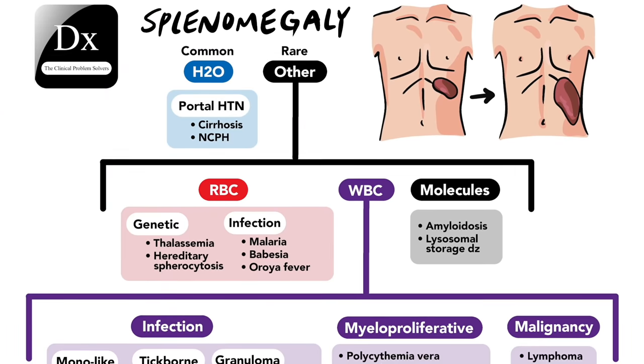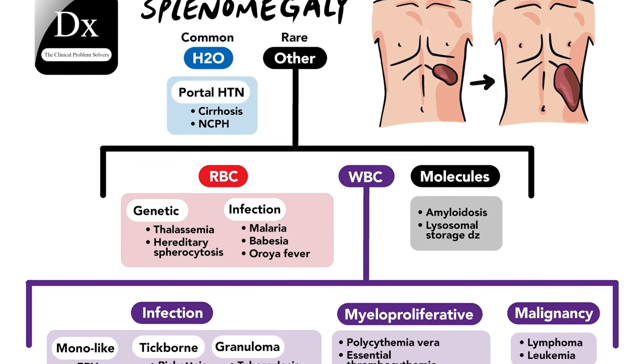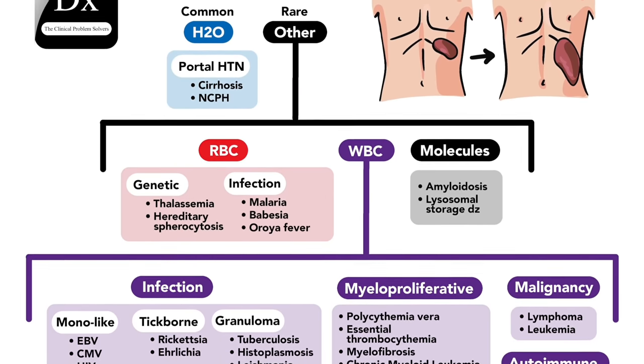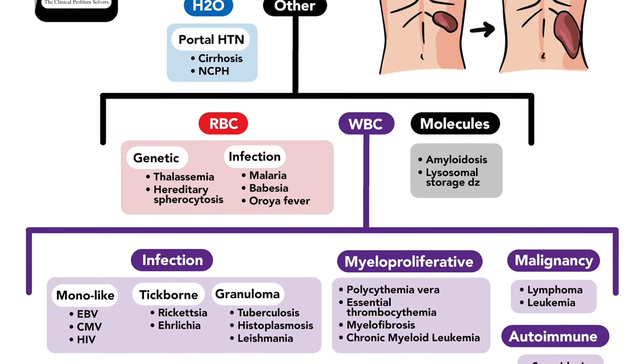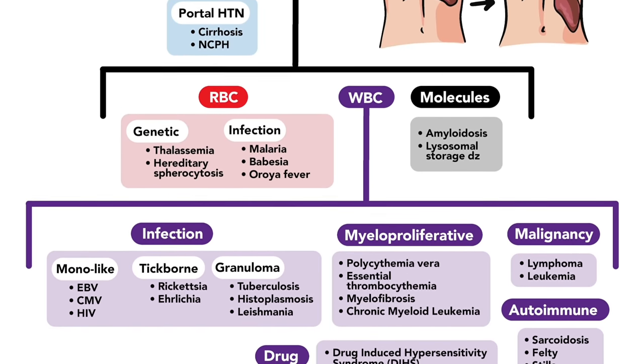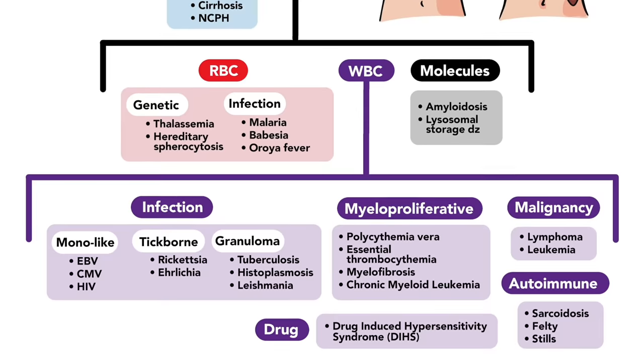Many diseases can affect the spleen. Obviously, if there is a disease in the blood, it can affect the spleen. The lymph system — including lymph nodes — can also be affected. If you have any infection in your body, it can affect the spleen, such as malaria or cancer.